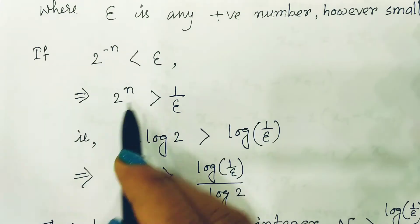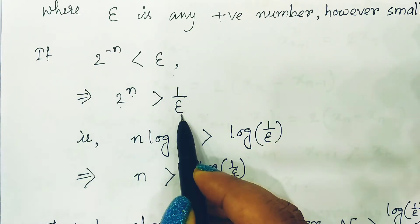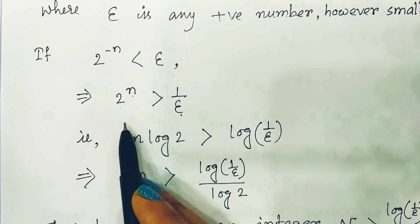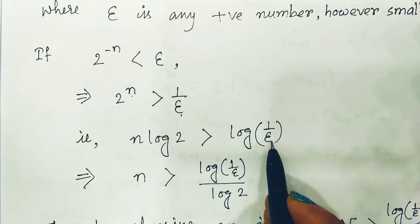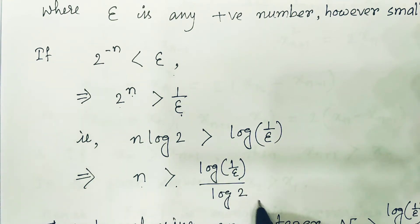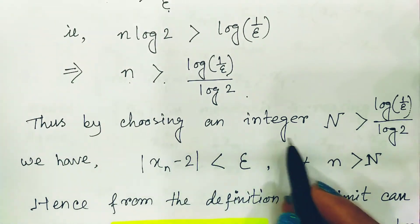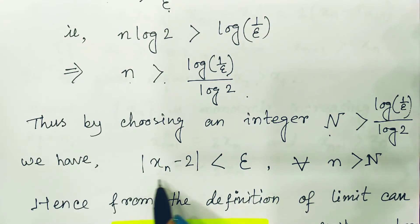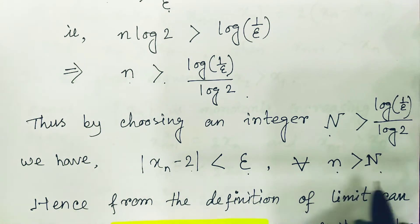If 2^(-n) < epsilon, then 2^n > 1/epsilon. Taking logarithm on both sides, n·log2 > log(1/epsilon), so n > log(1/epsilon)/log2. Thus by choosing an integer N greater than this value of n, we can say |xn - 2| < epsilon for all n > N. This is our definition of the limit.